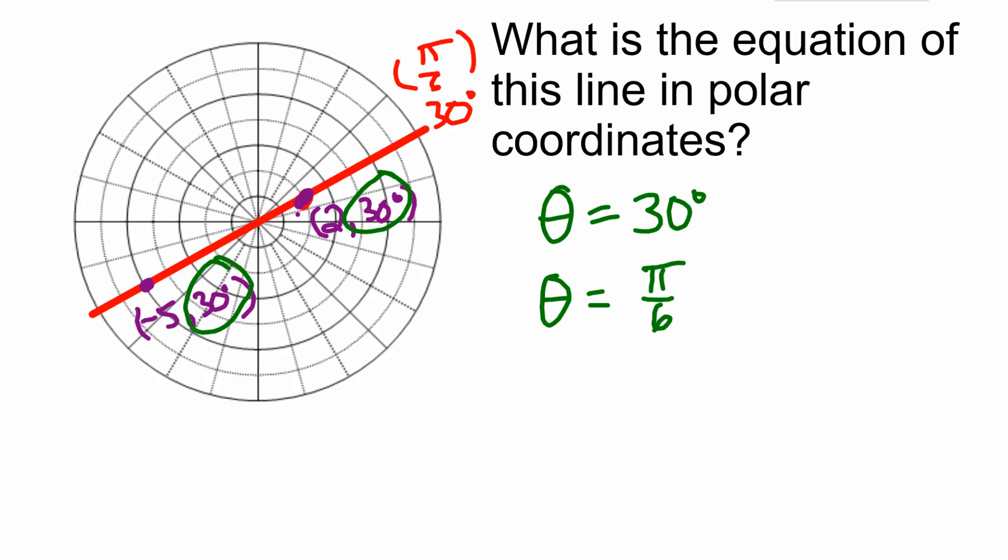I encourage you to think about this: there are many different correct ways of writing this line equation. You don't have to use 30 degrees—you could use a different degree. Think about that. You should come up with at least two more ways to write this equation. That's it for the intro to polar graphing. In the next video, we'll talk about finding distance between two points in the polar coordinate system.